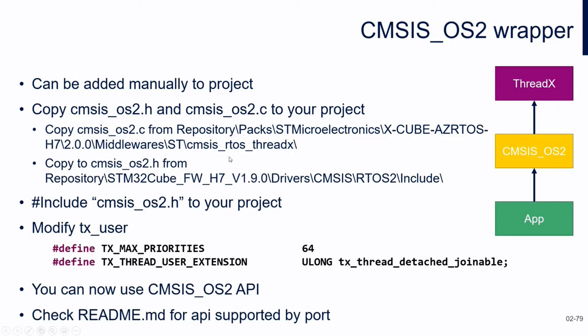It's just a copy of two files — CMSIS-OS dot H and dot C — and you only need to modify the X user. The main thing is that with the CMSIS-OS v2 wrapper, you can call the RTOS API of ARM, and beyond that you can use FreeRTOS or ThreadX. So it's very useful for switching from a current implementation with FreeRTOS to a new implementation with ThreadX.